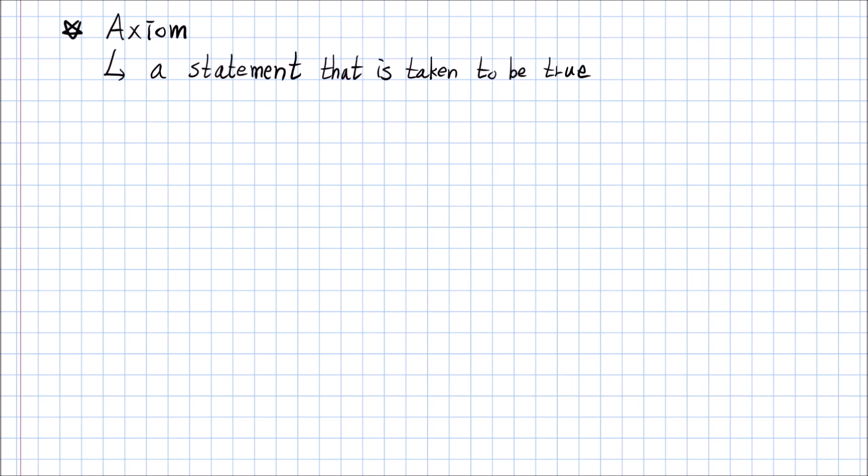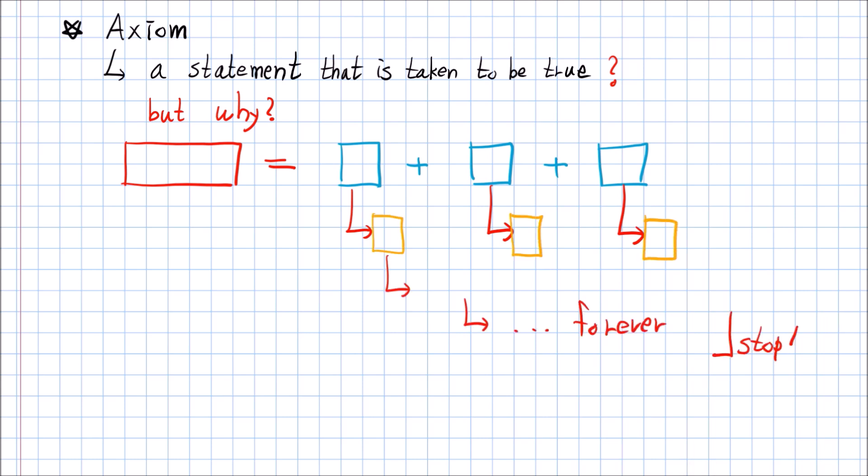But after hearing this explanation of an axiom, you might say, why do you take it to be true? But they always answered like, to define certain concept, you need other concepts. And to define these concepts, you need another concept. So since you can't do this forever, you need to stop somewhere.